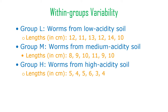I made up some numbers to demonstrate this. The worms in the low acidity soil grow pretty big: 12, 11, 13, 12, 14, and 10 centimeters. From the medium acidity soil group we have 8, 9, 10, 11, 9, and 10 centimeter worms.